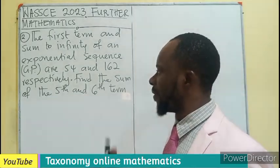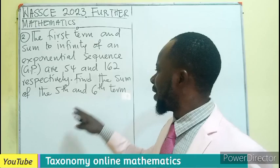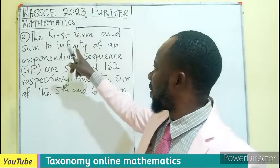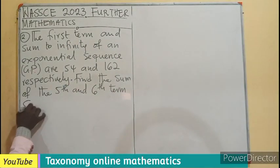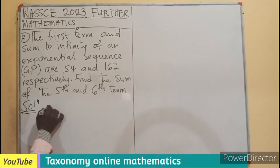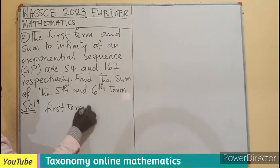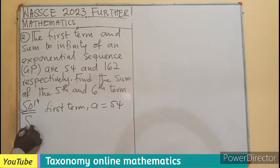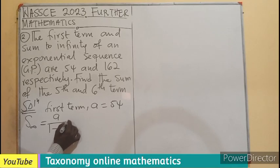So for us to find the sum of the fifth term and the sixth term, we need a common ratio because the first term has been given. So what do we do? Let's bring out the terms in the question. We have first term, labeled as A, and that is the 54 we have been given. Then sum to infinity equals A divided by 1 minus R, and this equals 162.